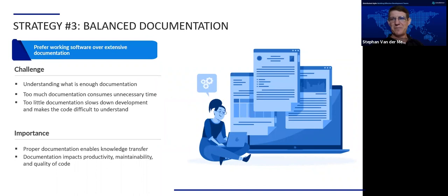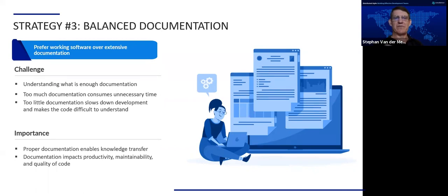Let's go to the third strategy: documentation. This may seem boring — nobody wants to do it. However, Agile says we prefer working software over extensive documentation, but note: it is over extensive documentation, not above all documentation. There is a place for documentation, but it needs to be done in a balanced way — just enough. Too much and you consume unnecessary time; too little and it takes too much time for a new person to learn the code, or even for the same person returning to the project later.